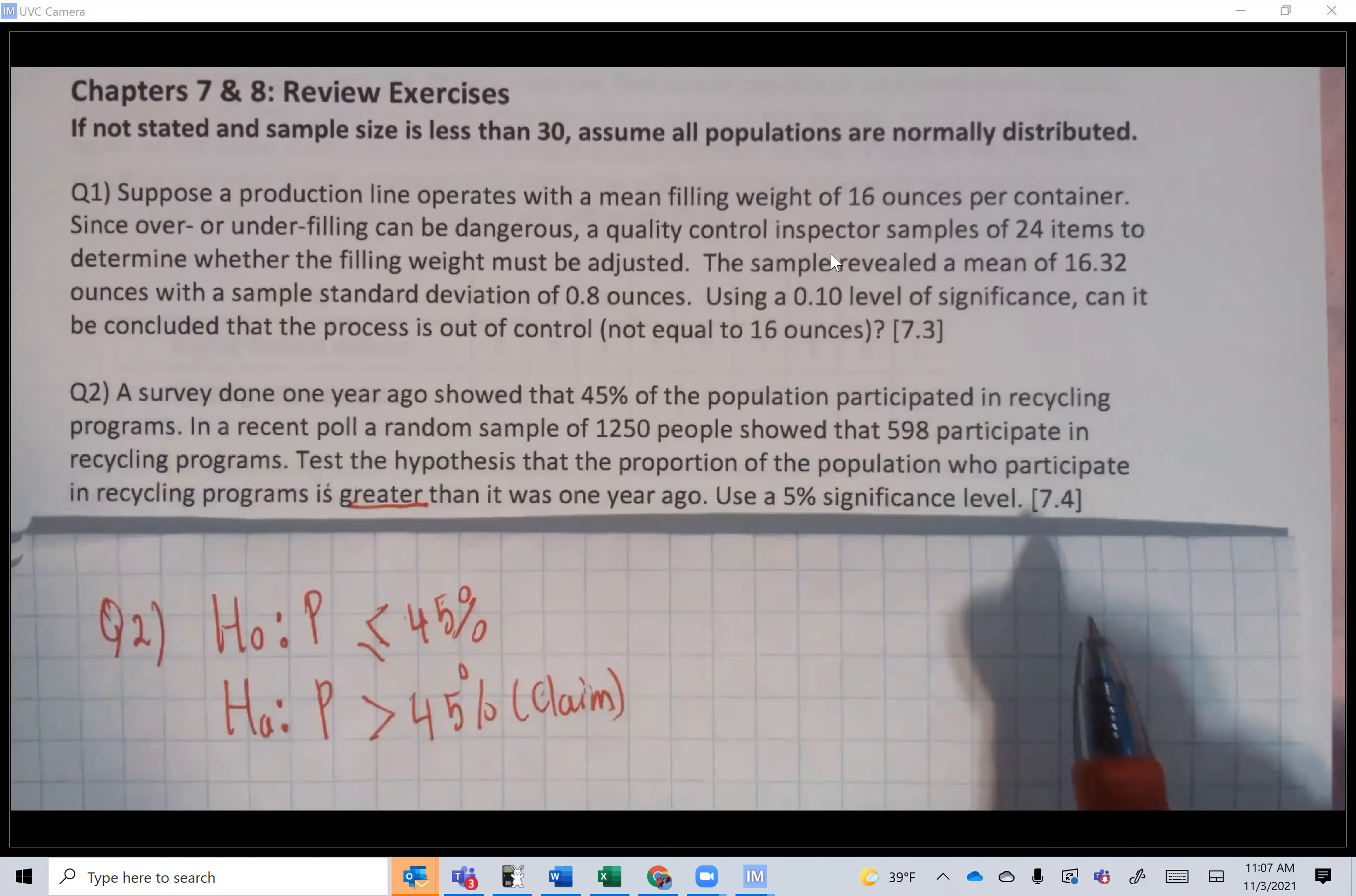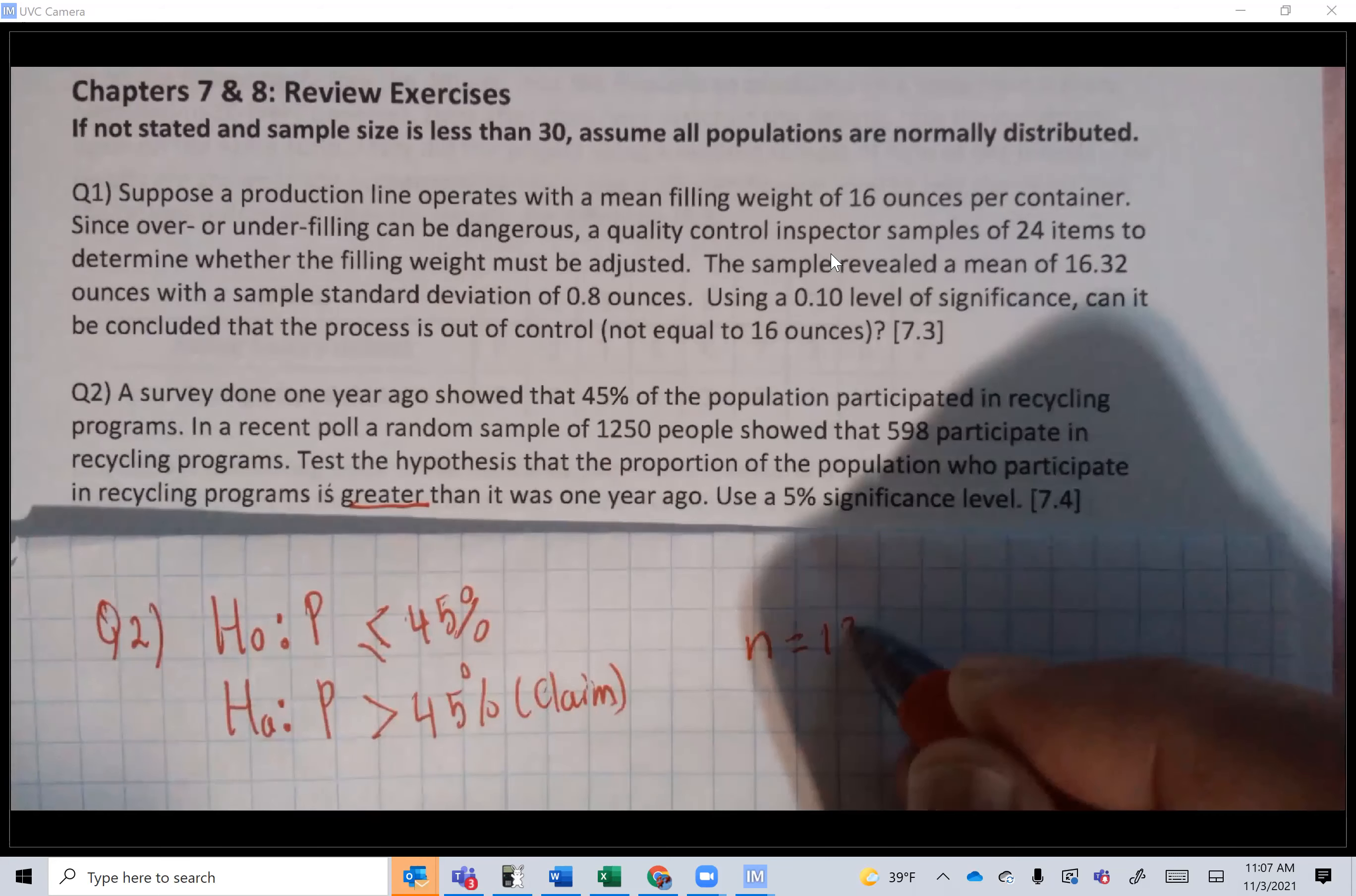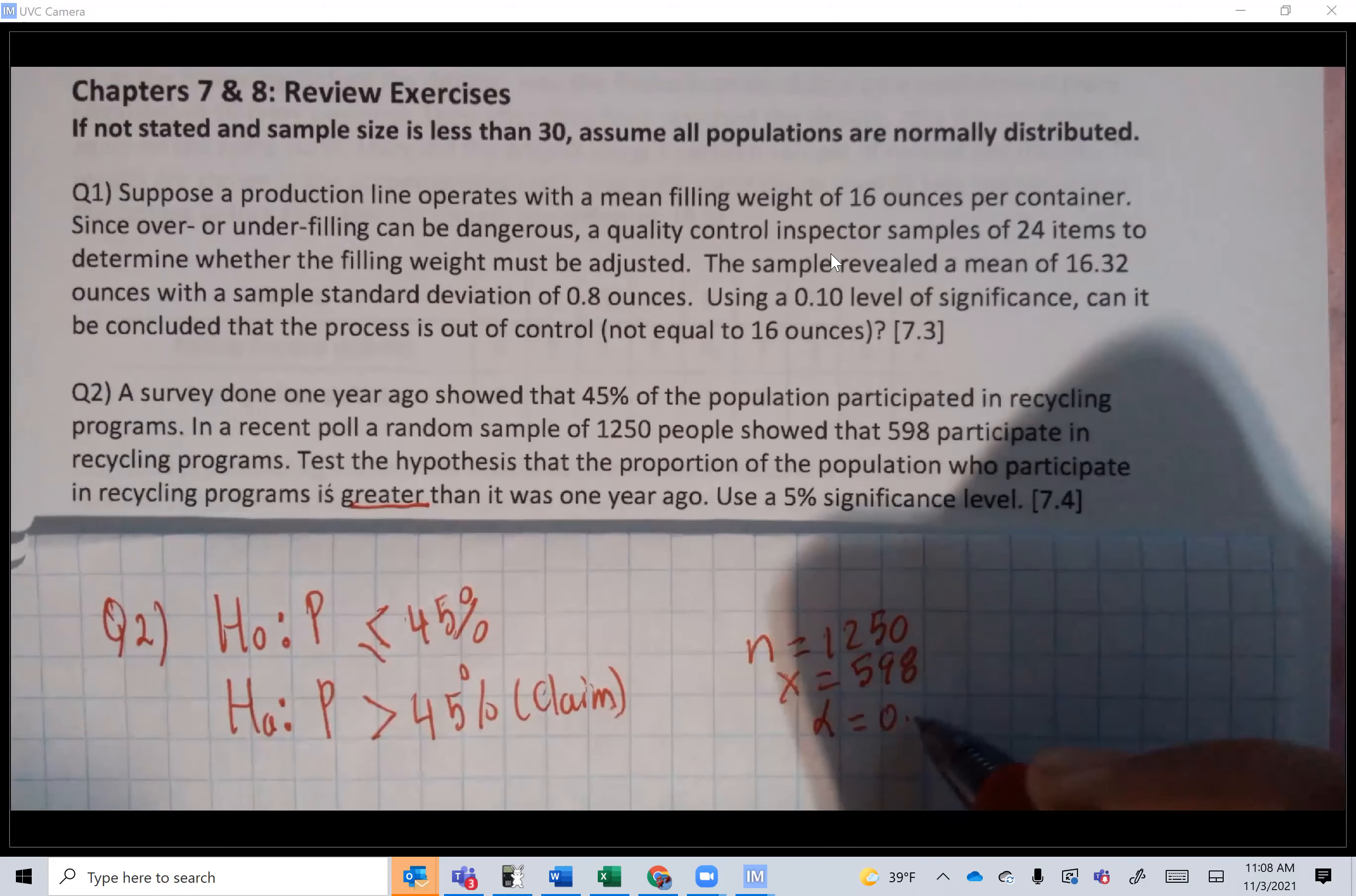This is a good sheet because I even tell you what section the question comes from. We have n = 1250, x = 598, alpha = 0.05, and it's a proportion z-test.